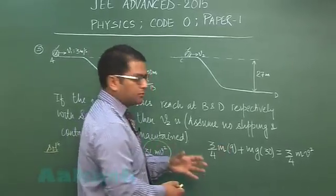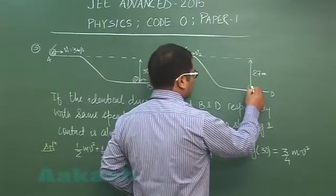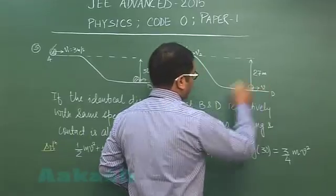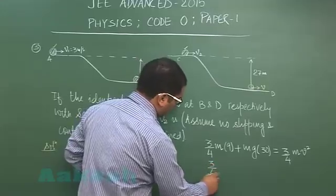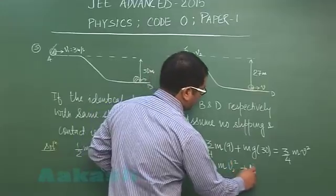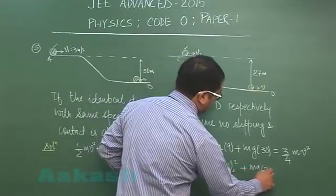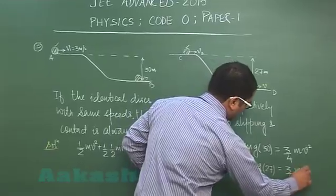Now by the same token, if we go for the second disk, it would also be having the speed v. For this, if I write energy conservation: 3 by 4 m v2 square plus mg times height 27 would be 3 by 4 m v square.